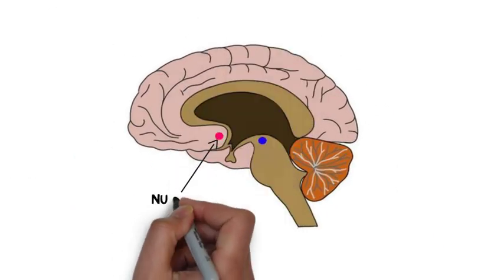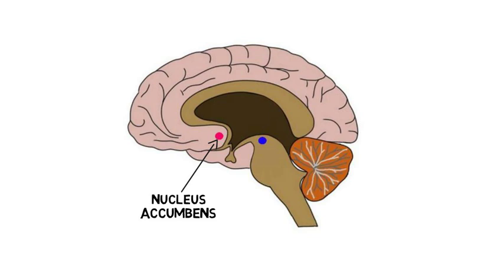Although the nucleus accumbens is best known as part of the reward system, its functions are much more complex than simple reward processing, and are still not fully understood.